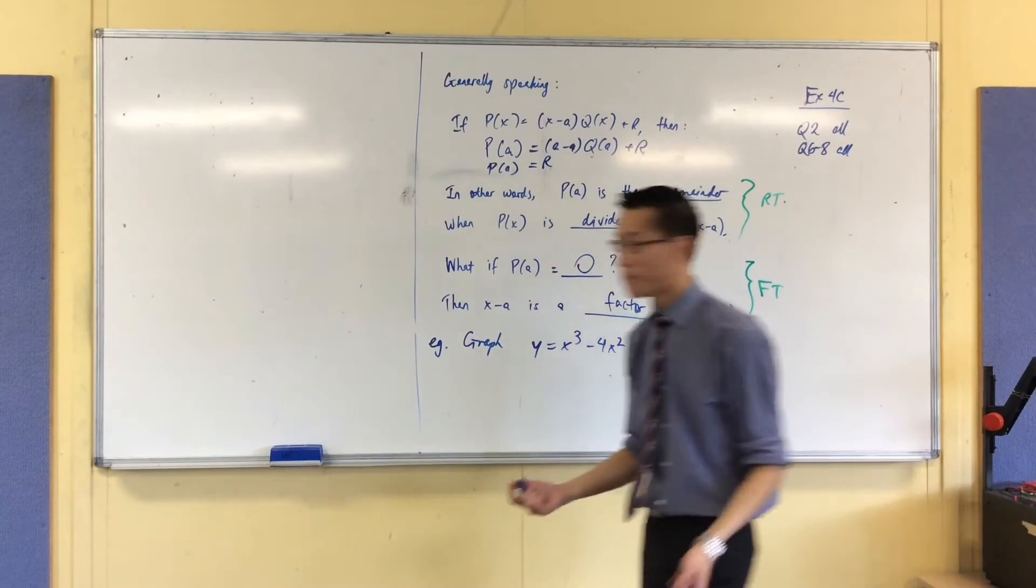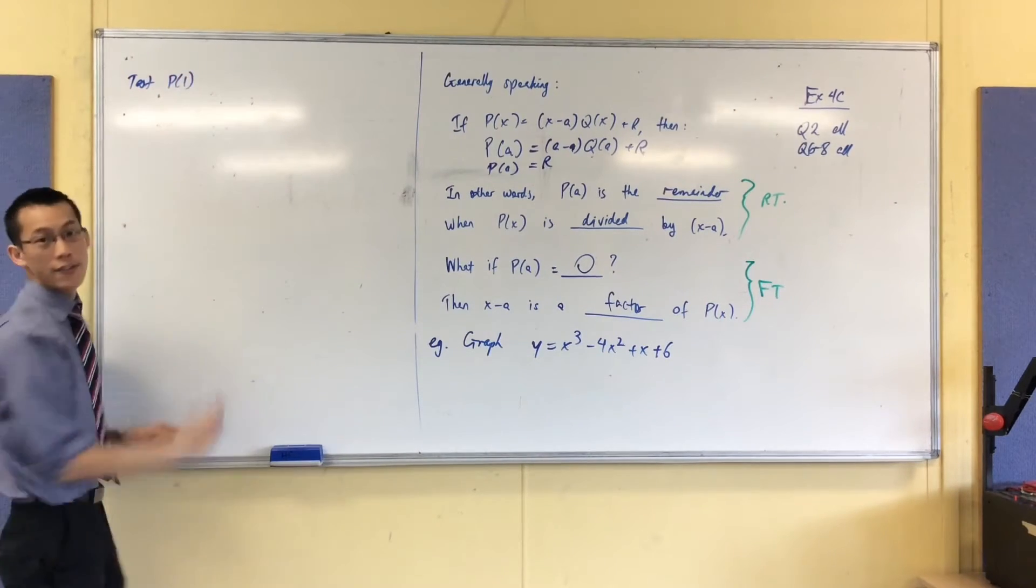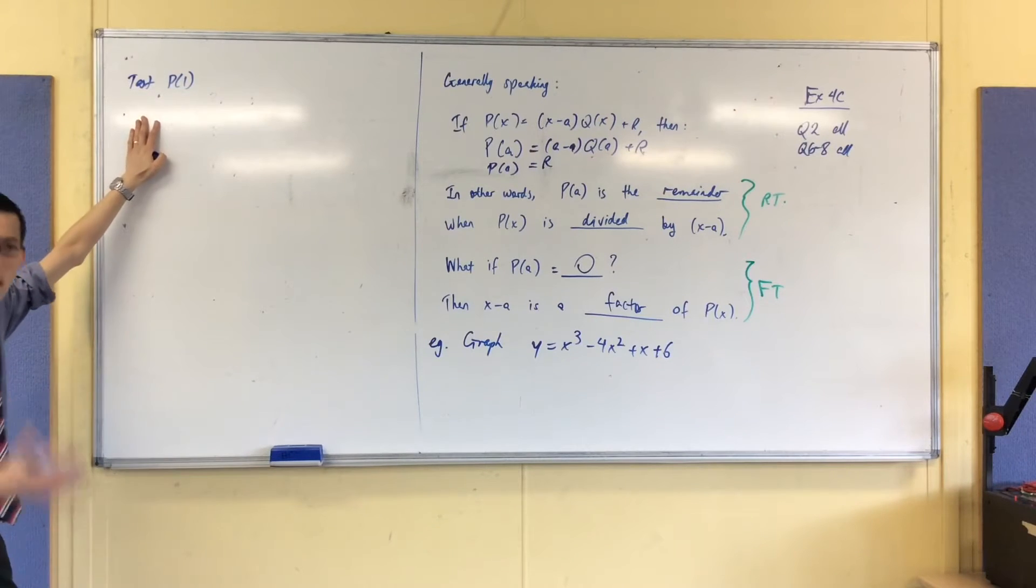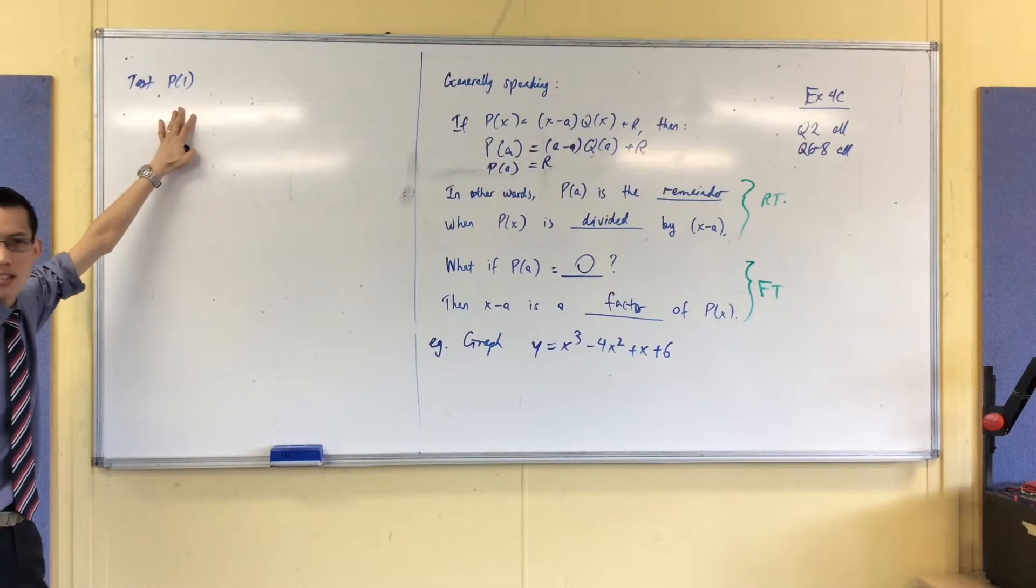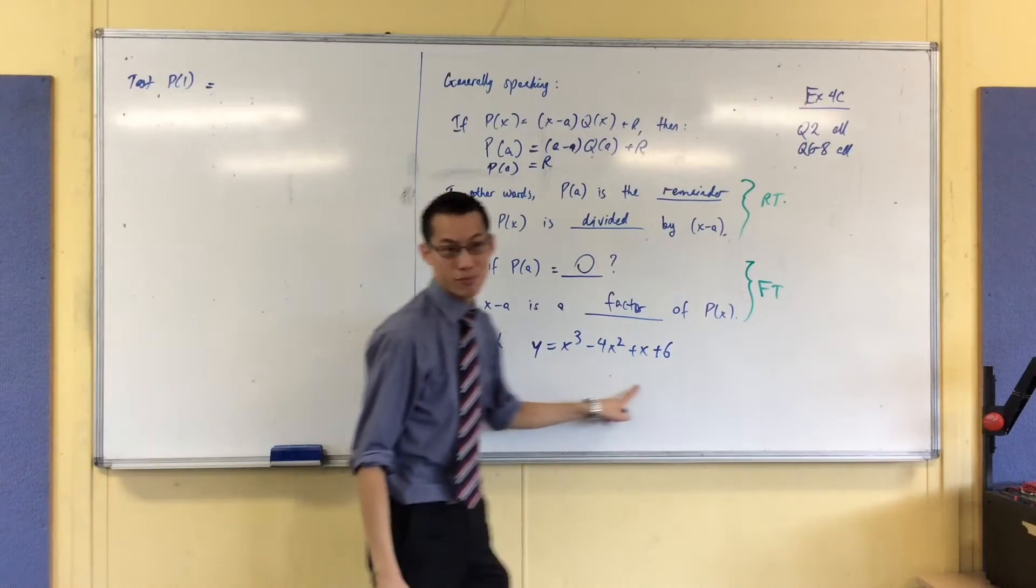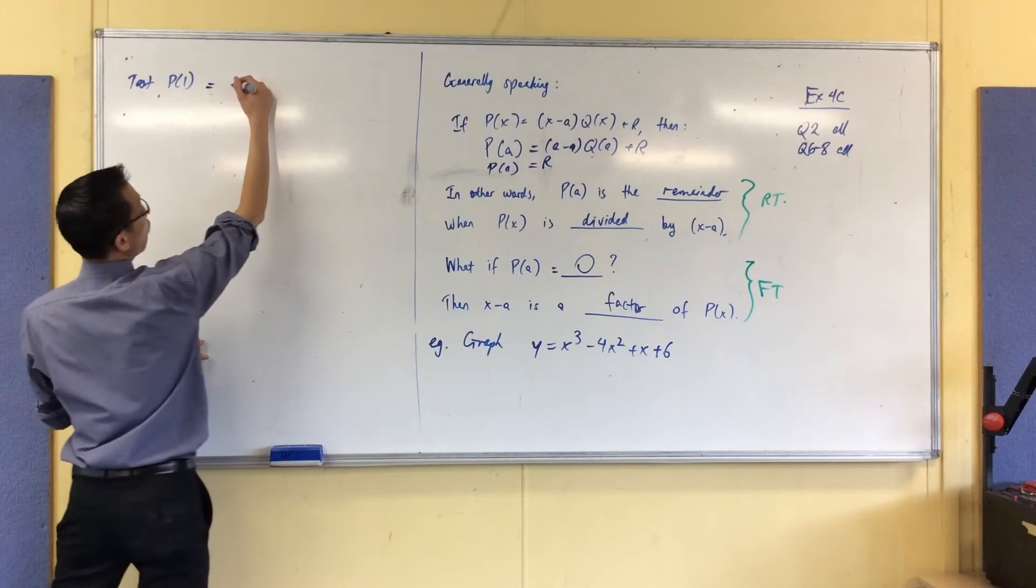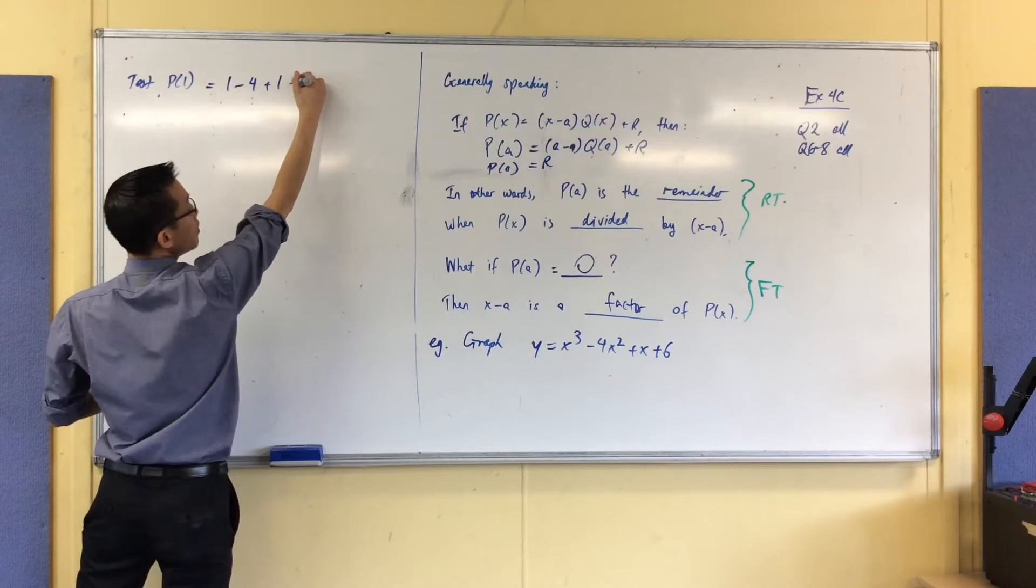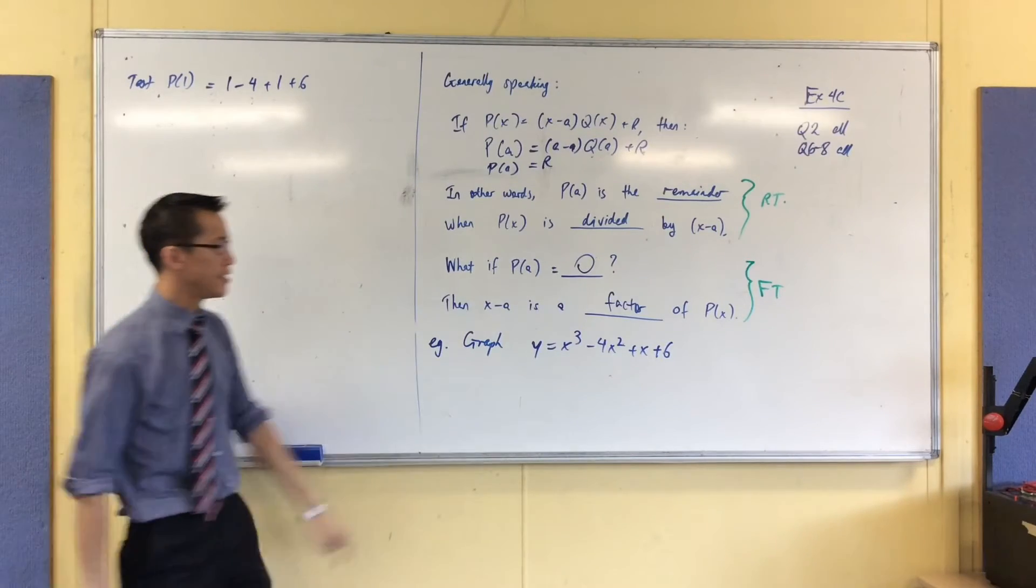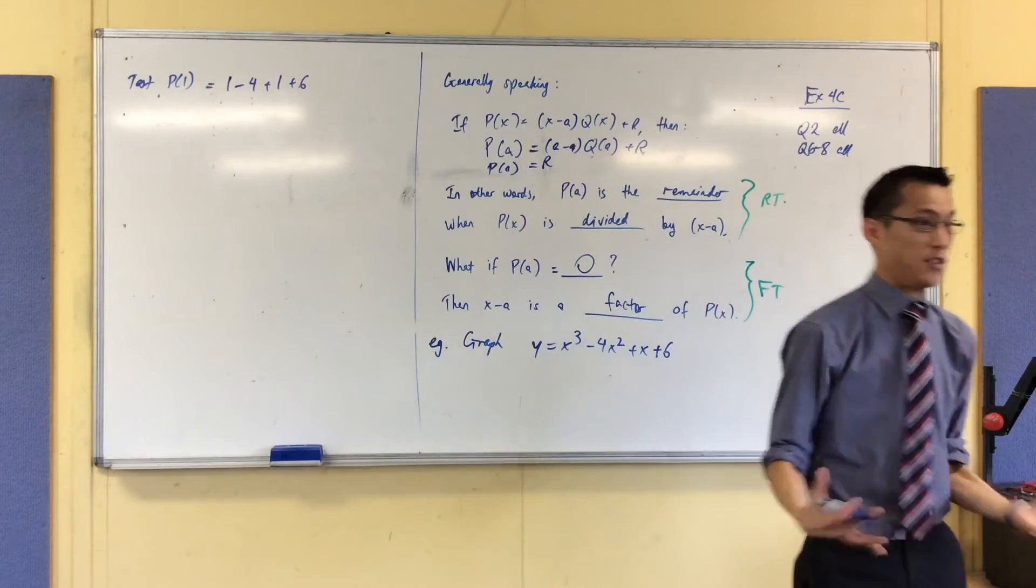The first number I always try is 1. So, I'm going to test P(1), and in fact, this is exactly the way I write it. I say test, because I'm trying to find something. I don't know what the answer will be. I say P(1). One's one of the first values I try because it's easy. I'm going to get 1 take away 4 plus 1 plus 6.